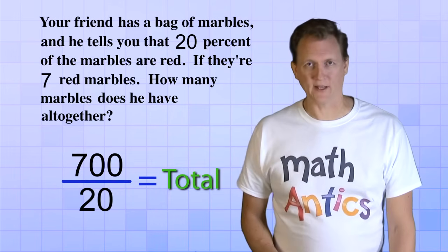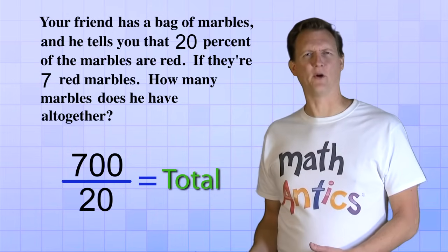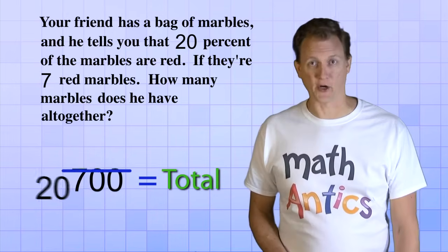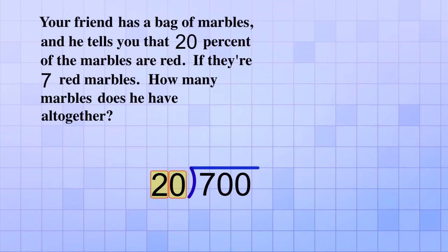Hmm, well, we could use a calculator to divide, but this doesn't seem too hard, so I'll just do the division the long way. 20 is too big to divide into the first digit, 7, so we'll need to include the digit next to it as well.